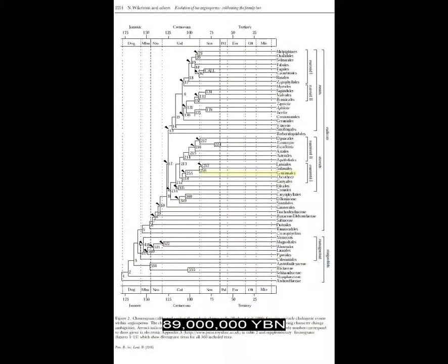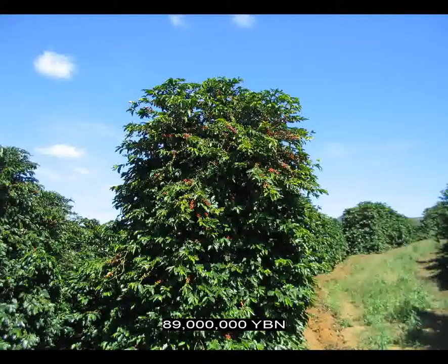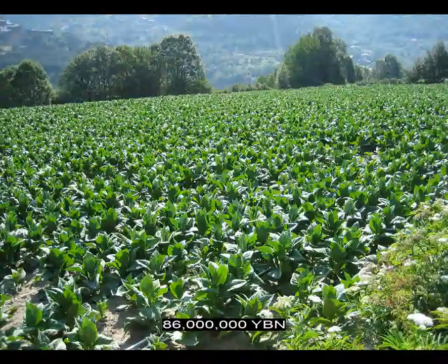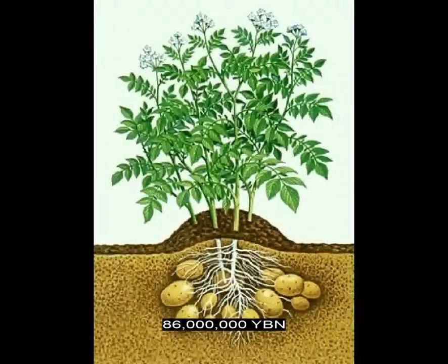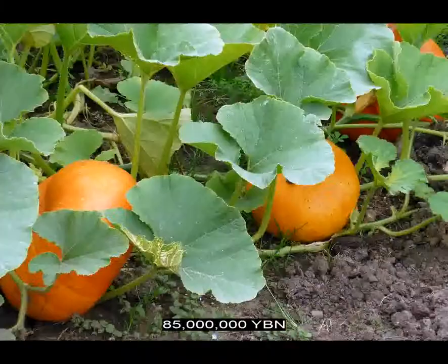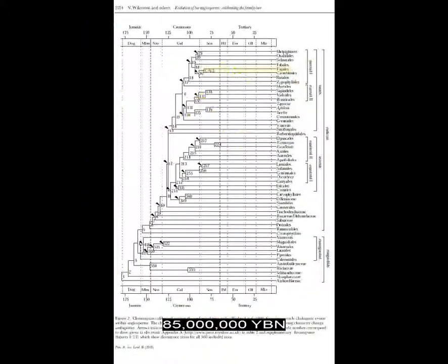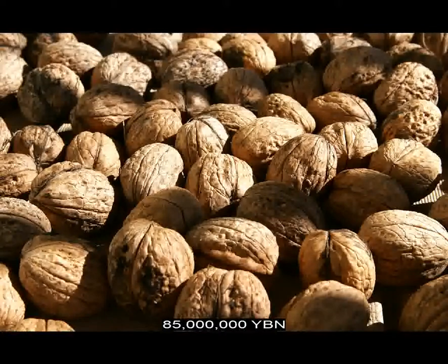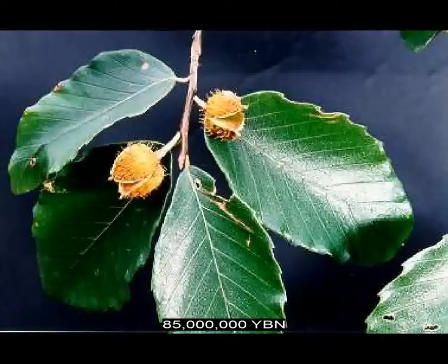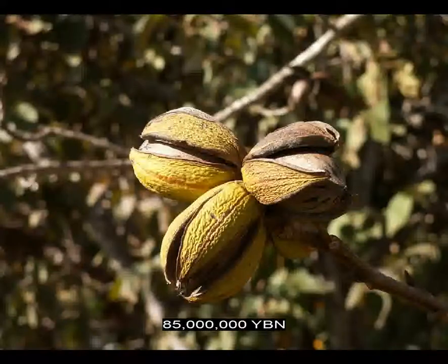Asterids Gentianales evolve — includes oleander and coffee. Asterids Solanales evolve — ancestor of bell pepper, tomato, tobacco, potato, and eggplant. Rosids Cucurbitales evolve — ancestor of melon, cucumber, pumpkin, squash, and zucchini. Rosids Fagales evolve — ancestor of many flowers that produce edible nuts: birch, hazelnut, chestnut, beech nut, oak, walnut, pecan, and hickory. Birds Galliformes evolve: chicken, turkey, pheasant, peacock, quail. Birds Anseriformes evolve — ancestor of waterfowl: ducks, geese, and swans.